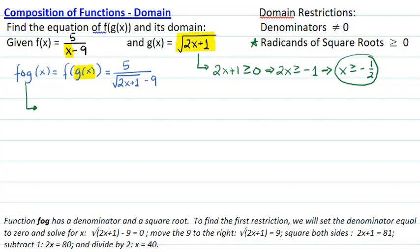The function f circle g has a denominator and a square root. First, we will check that the denominator is not equal to 0. To do so, we will set the denominator equal to 0 and solve for x. We will move the 9 on the other side to get √(2x+1) = 9, and then we will square both sides.